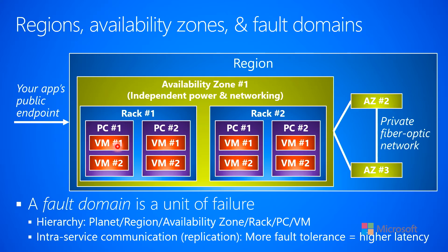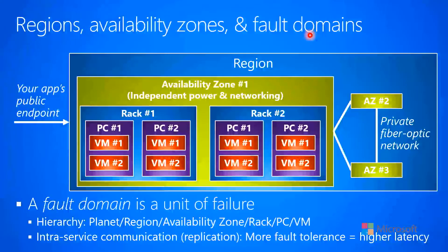A unit of a single point of failure is what we refer to as a fault domain — it's a domain where a fault occurring hurts everything. If a whole region goes down, then you lose everything inside that region. If an availability zone goes down, then you lose everything inside that availability zone. If a rack goes down, then you lose all the PCs. And if a PC goes down, then you lose all the VMs.